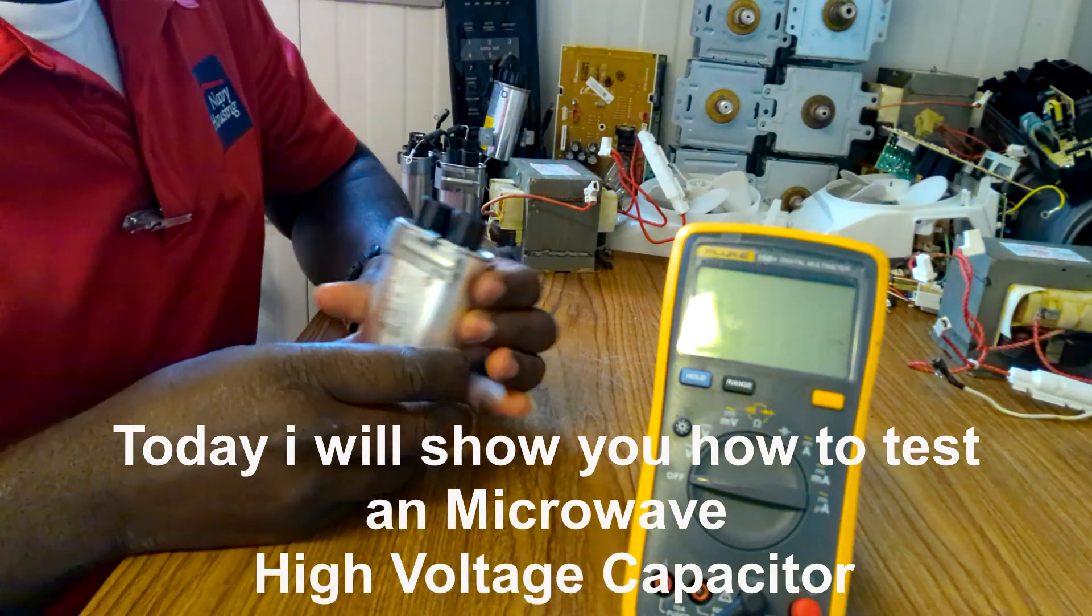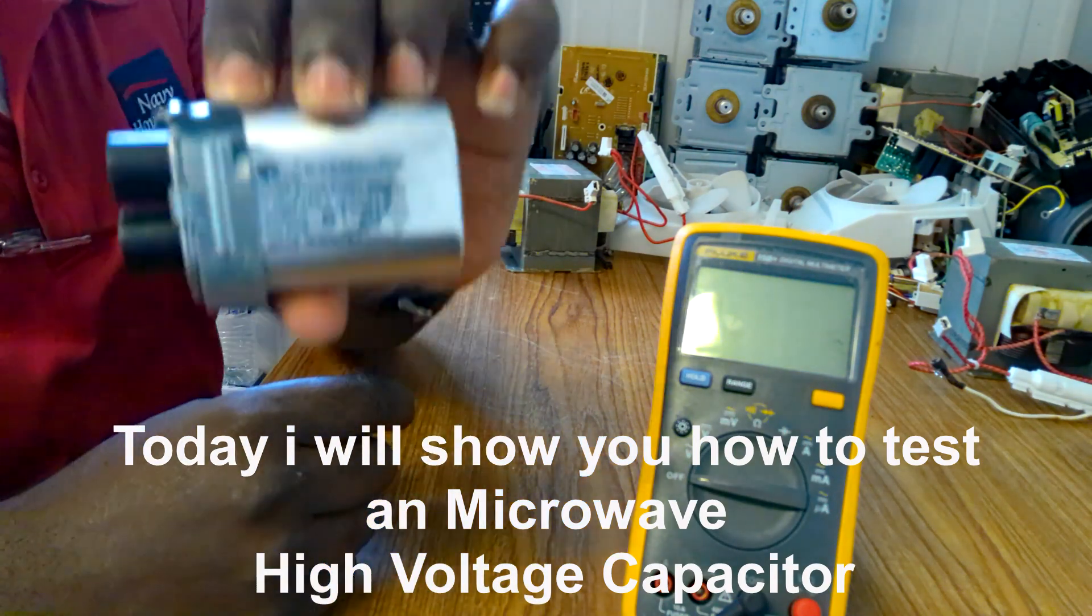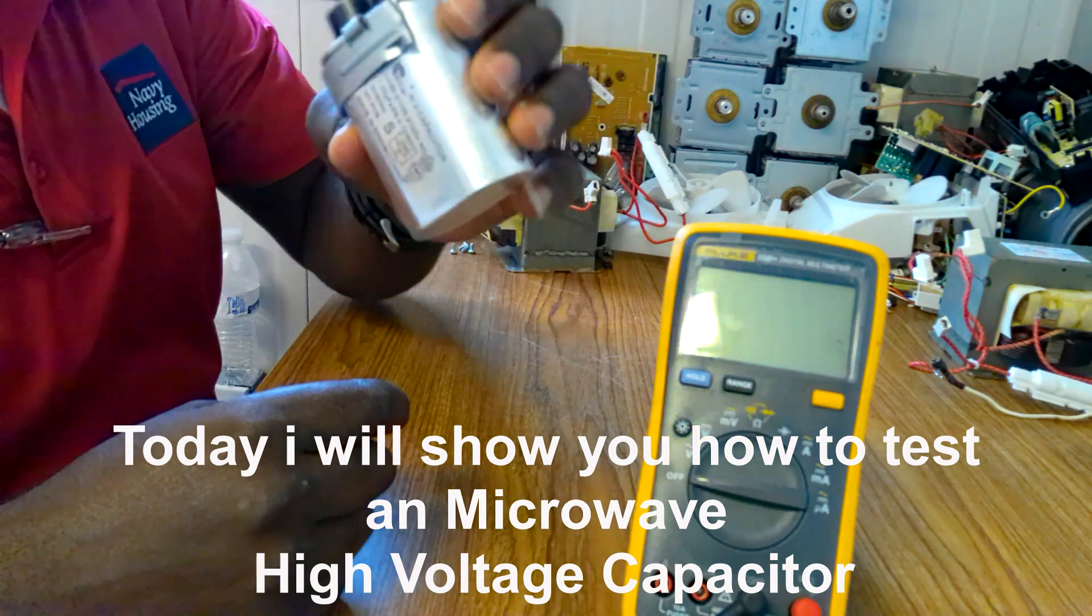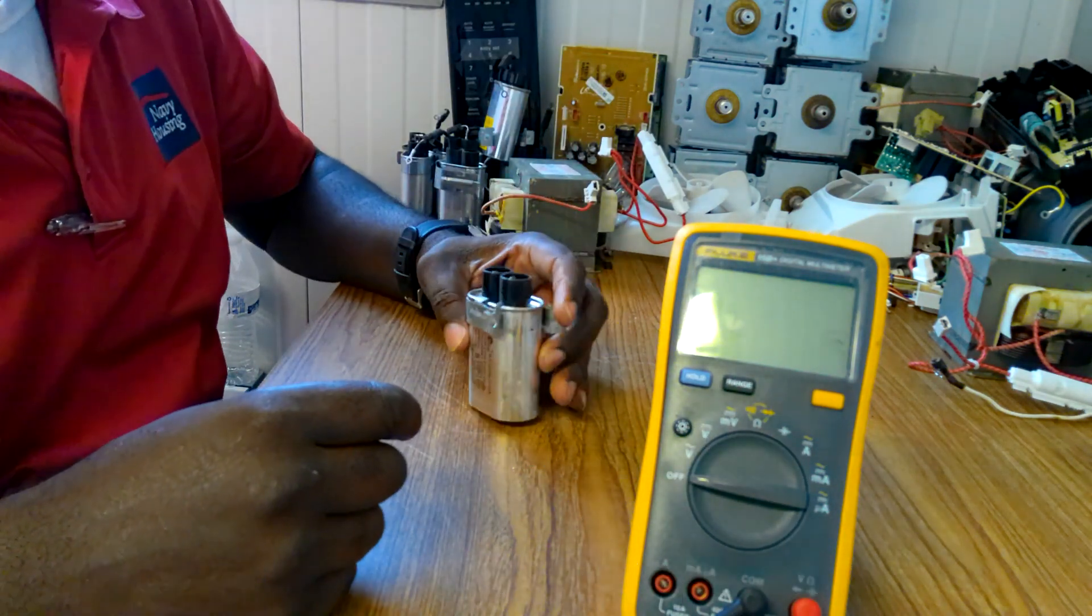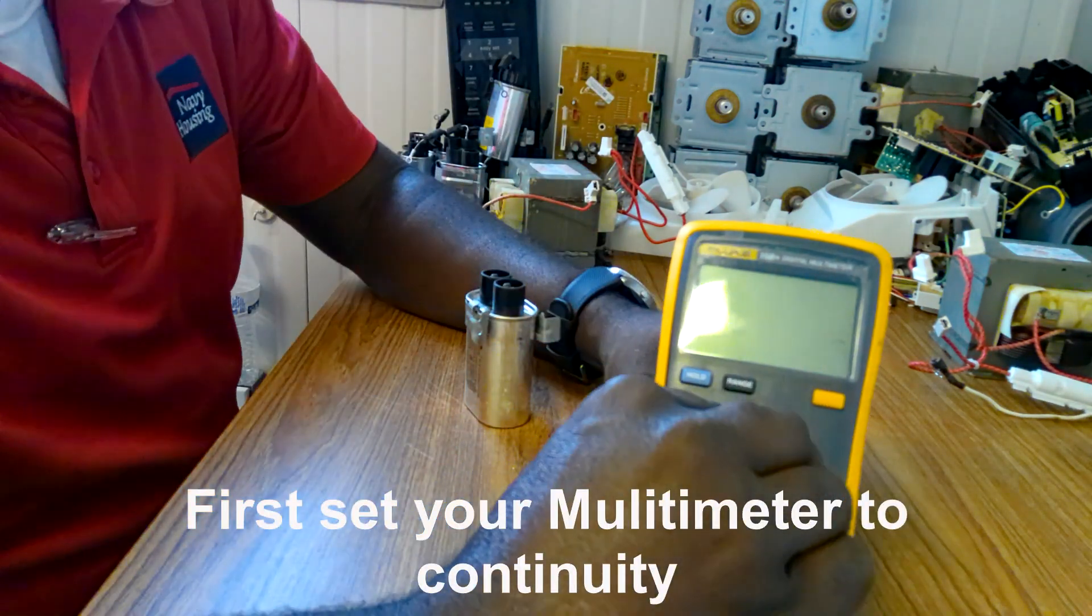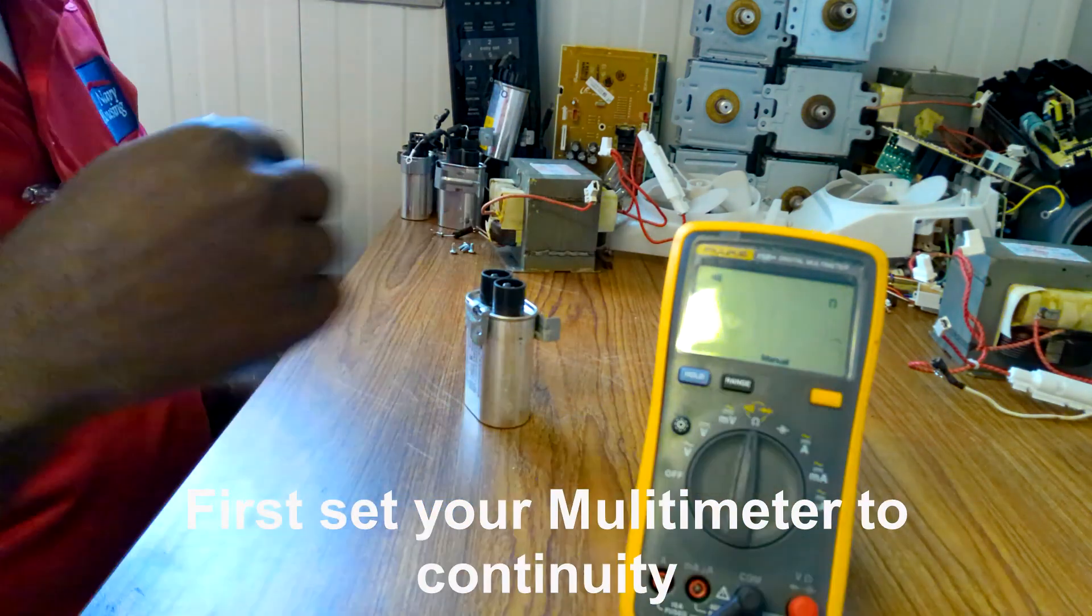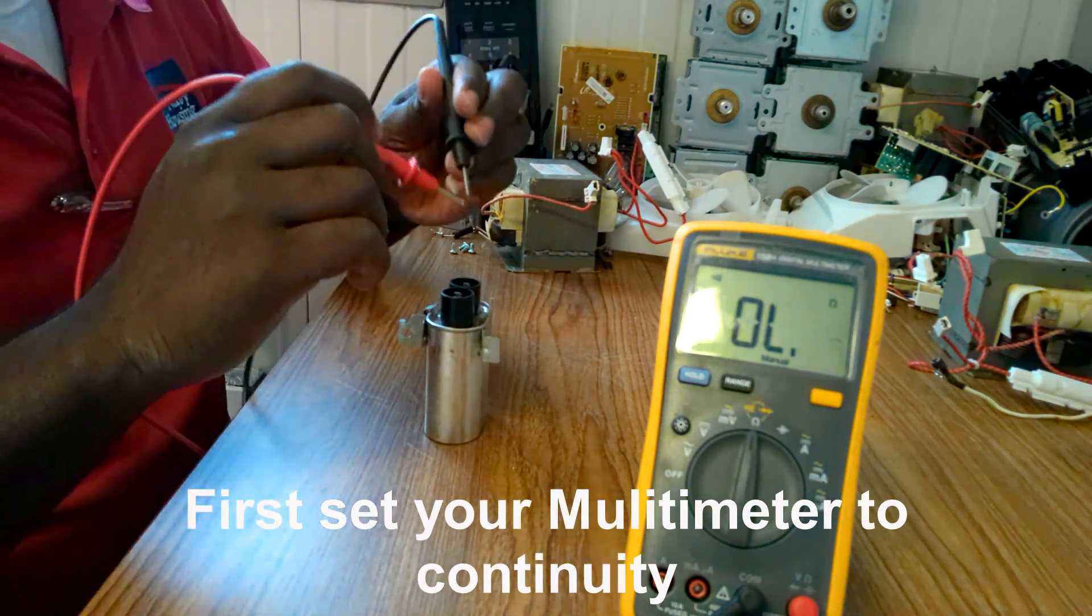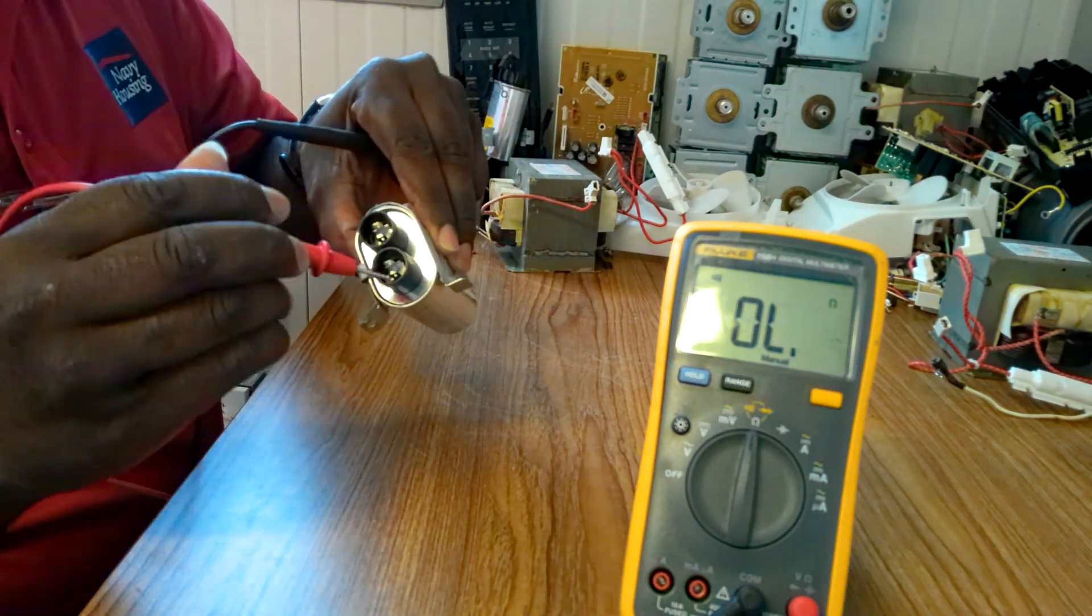Today, I am going to show you how to test a microwave high voltage capacitor. First, go to continuity. You must not get any continuity when you test these two ports.